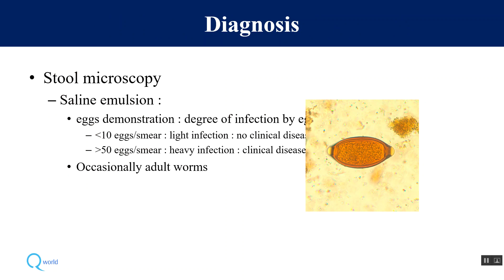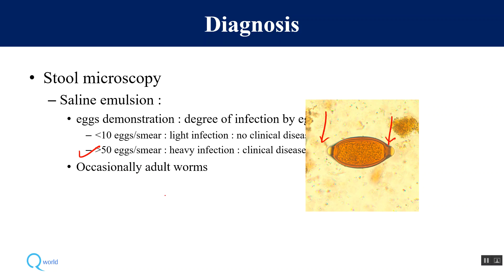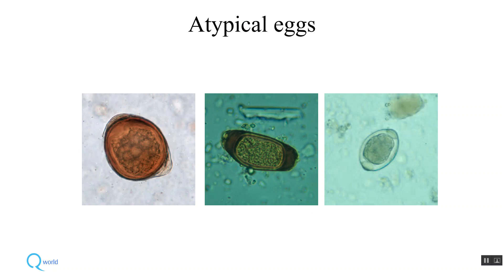In stool microscopy, we can see the eggs with the typical mucus plug at each pole and unsegmented ovum inside. If fewer than 10 eggs are seen per smear, it is considered a light infection; if more than 50 eggs per smear are seen, it is a heavy infection. Occasionally an entire adult worm may be seen in stool. Sometimes eggs may vary from the classic barrel shape, but the mucus plug will always be present to identify the egg of Trichuris trichiura.